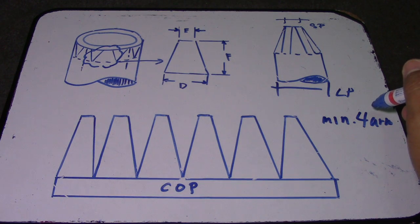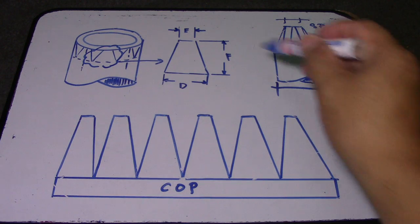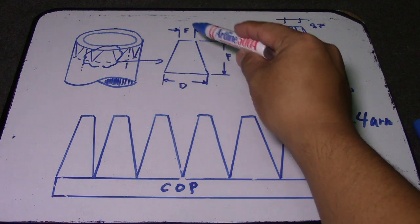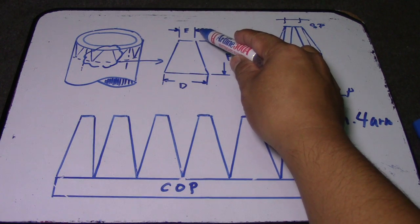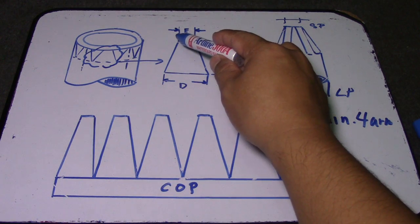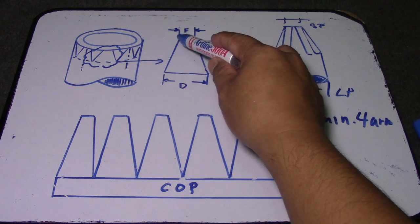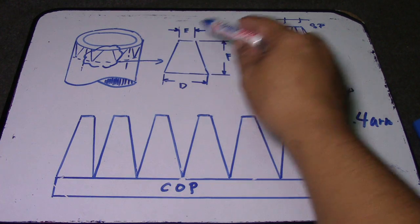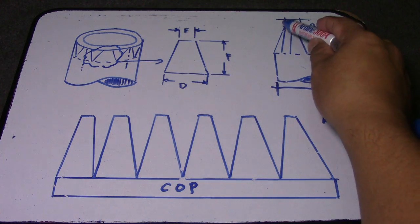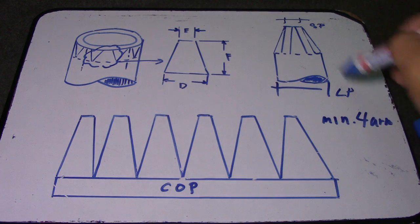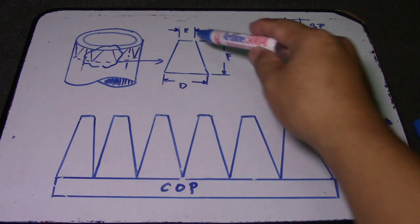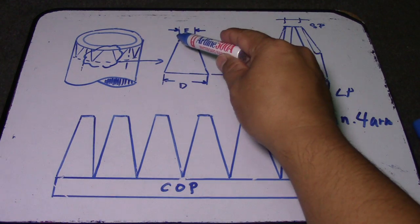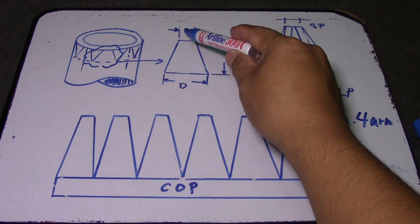Next is letter E. To get letter E: circumference of the small pipe divided by the number of arms. That gives you letter E.